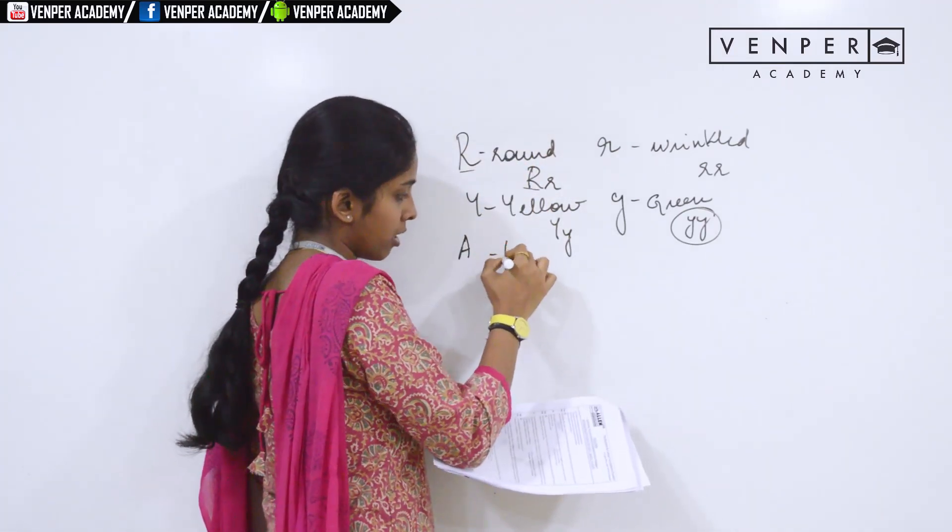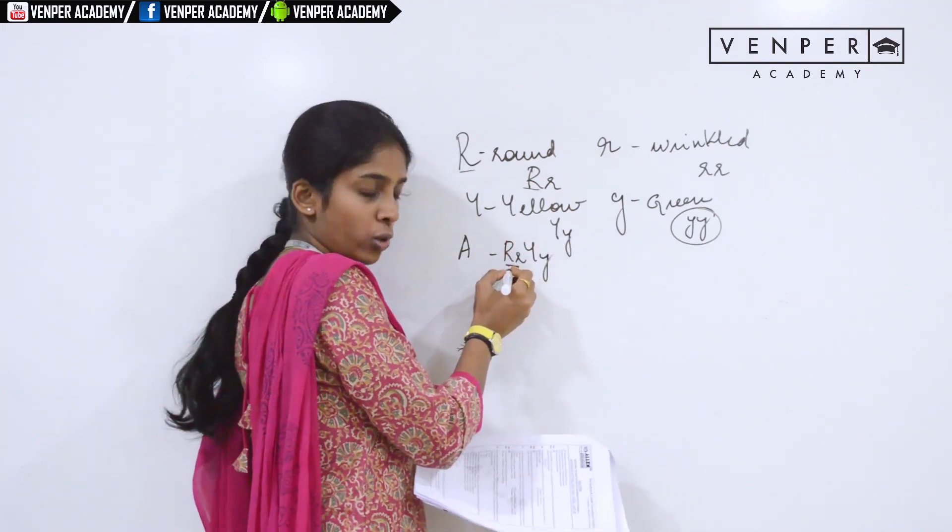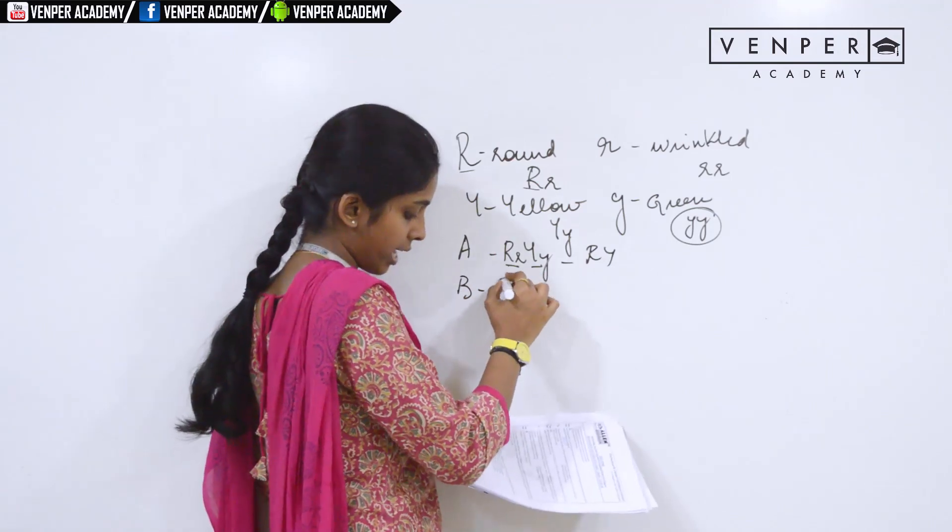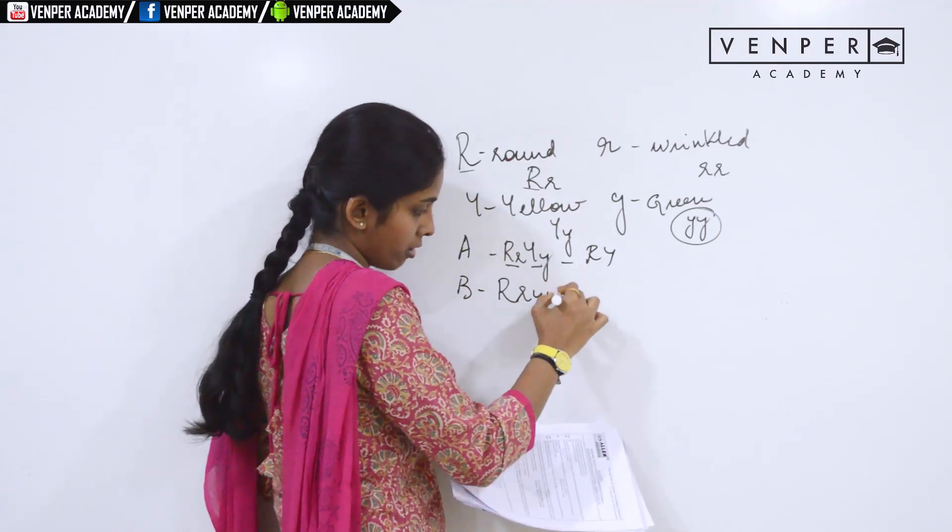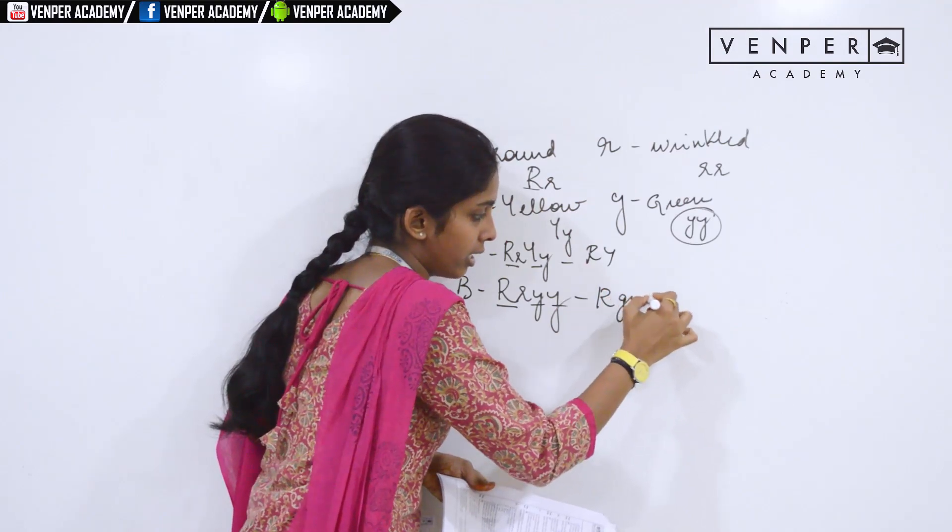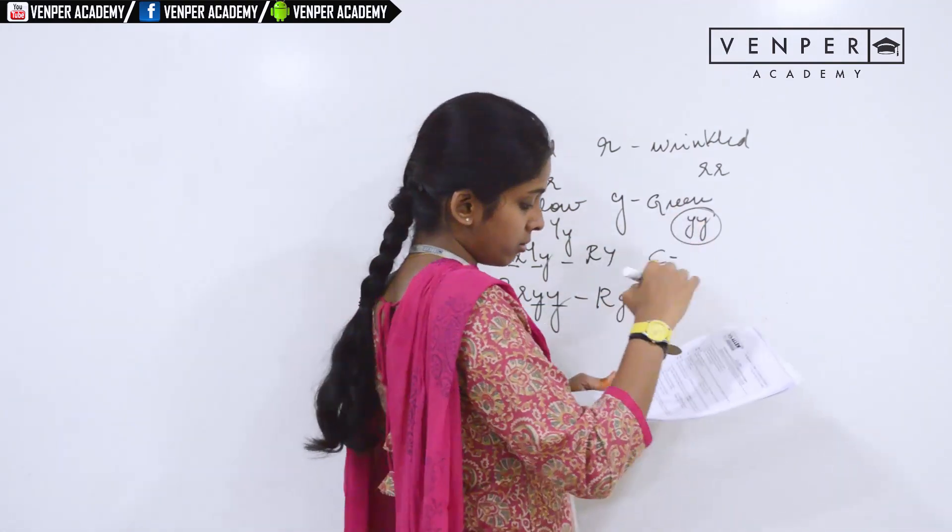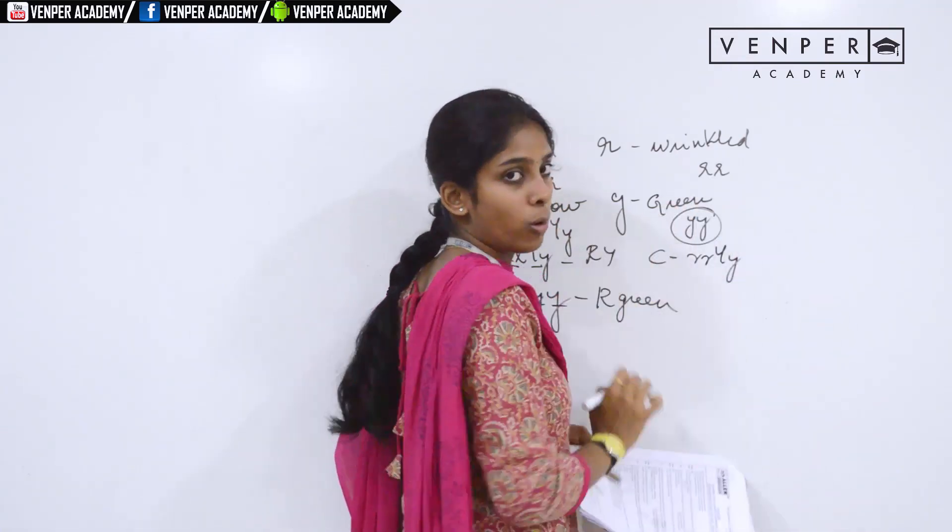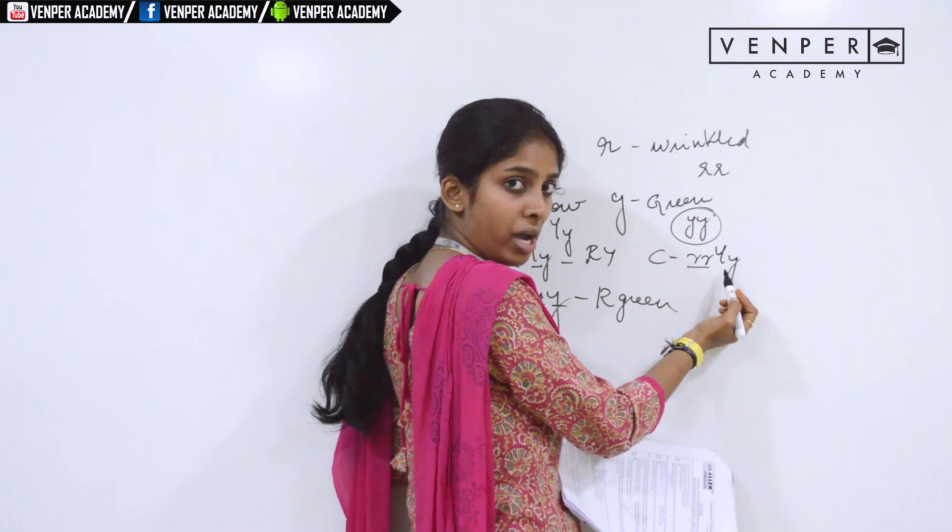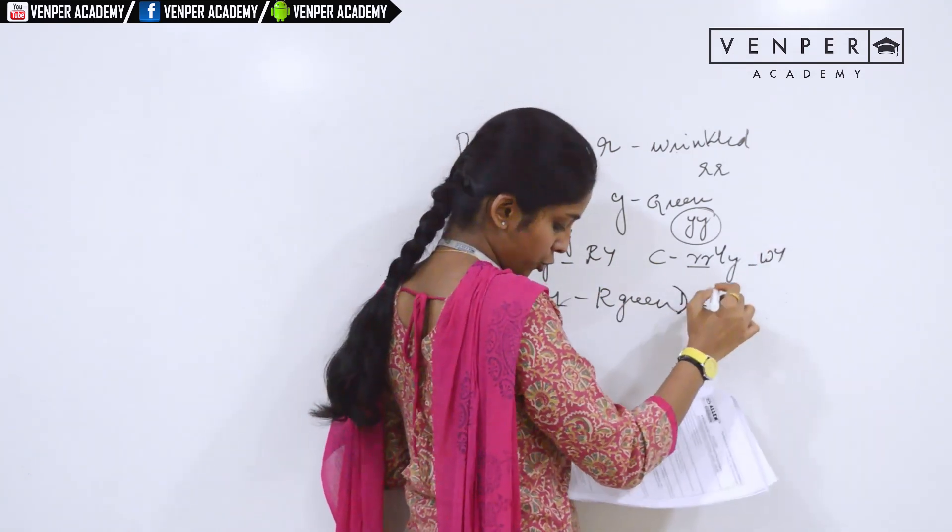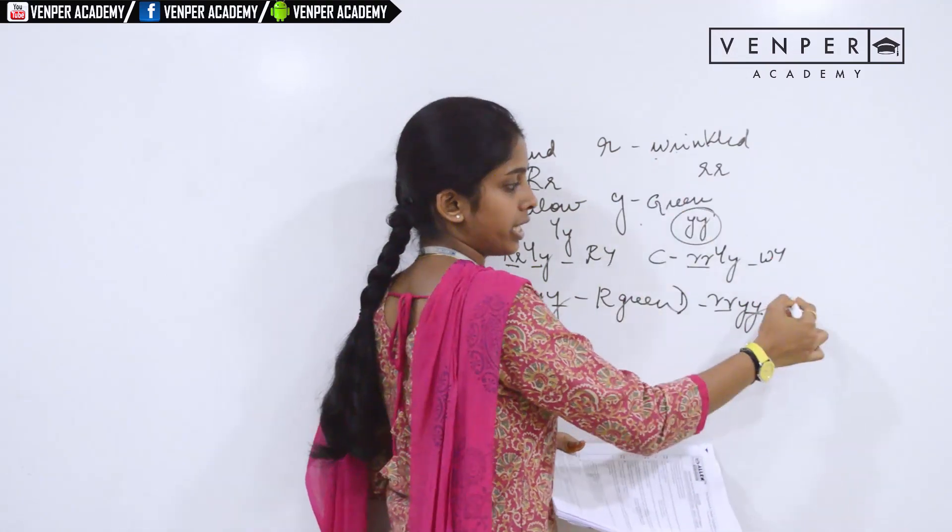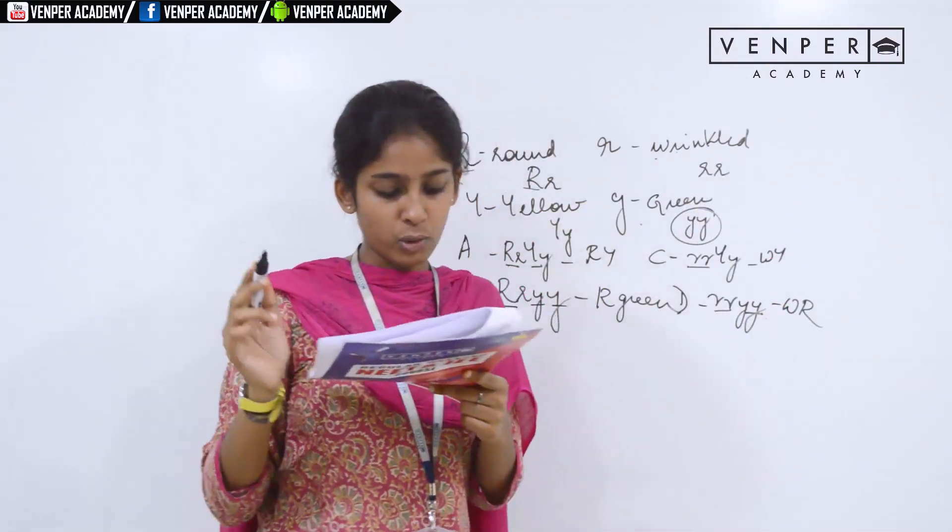A would be R, R, Y, Y. Capital R, so it is round. Capital Y is dominant, so yellow. This would be round yellow. The second combination: there is a capital R, so this will be round, and two small y, so it will be green. This would be round green. The third combination: R, R, capital Y, small y. Two small r, so it is wrinkled. One capital Y, capital Y is dominant, so this is wrinkled yellow. The last combination would be r, r, y, y. Both are recessive, so it will be wrinkled green. From this, find out which option matches. It is option 1.